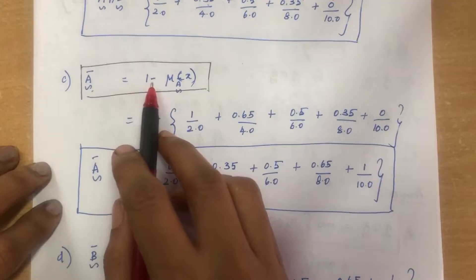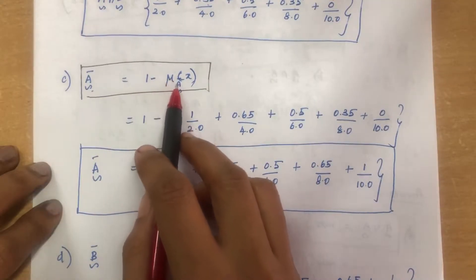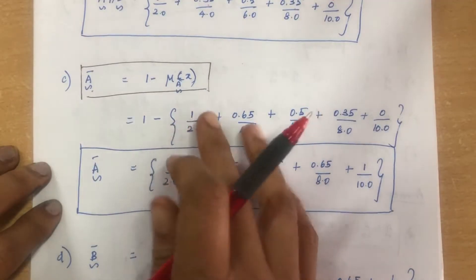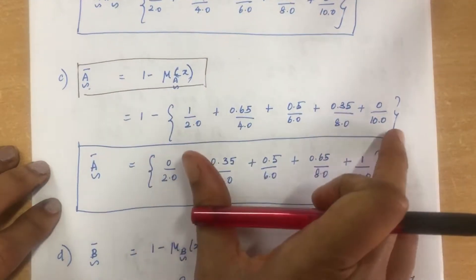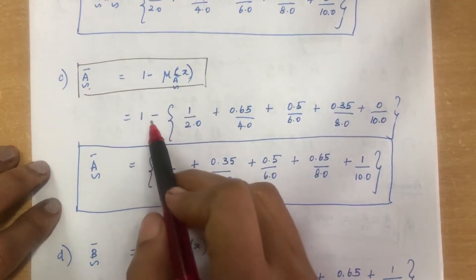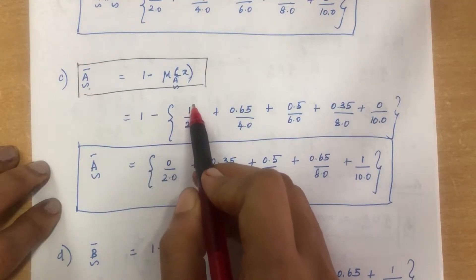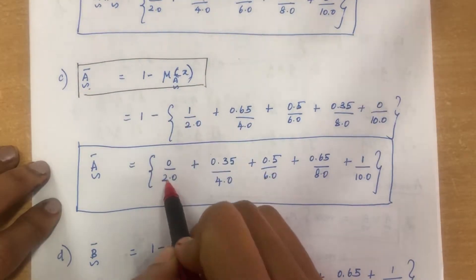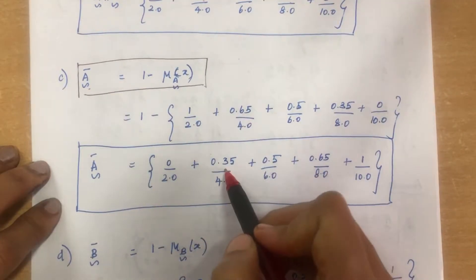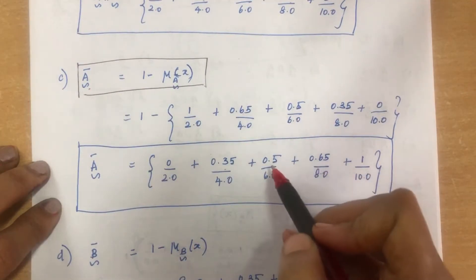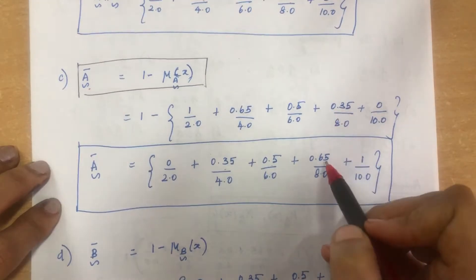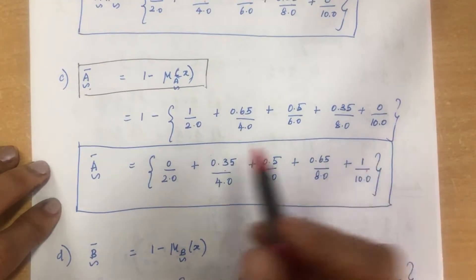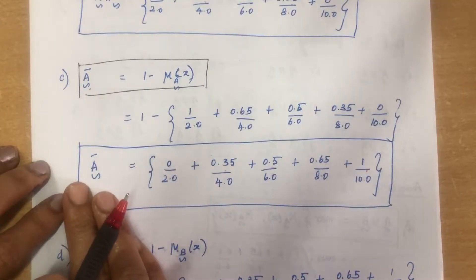A complement (A bar) is computed as: 1 minus membership value of A(x). We change only the numerator values: 1 − 1 = 0, 1 − 0.65 = 0.35, 1 − 0.5 = 0.5, 1 − 0.35 = 0.65, 1 − 0 = 1. So A bar = 0/2.0 + 0.35/4.0 + 0.5/6.0 + 0.65/8.0 + 1/10.0.